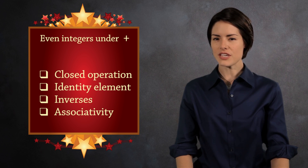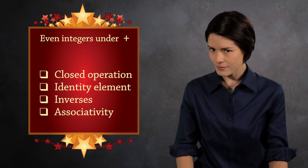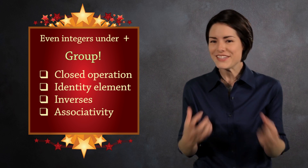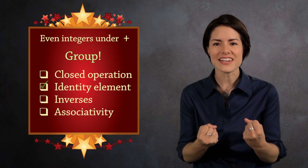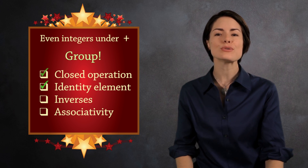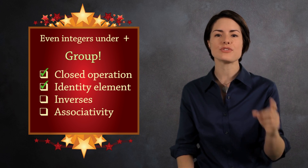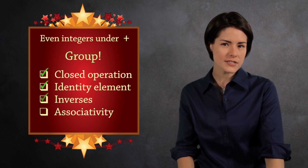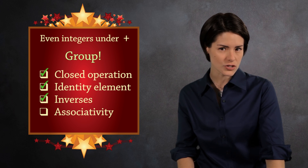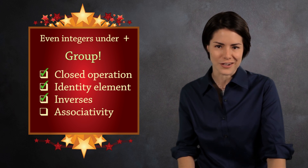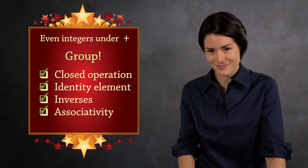The even integers under addition? Yes. The identity element zero is an even integer. Adding two even numbers gives you an even integer. And the opposite of an even integer is even. And of course, we have associativity. So this is a group.